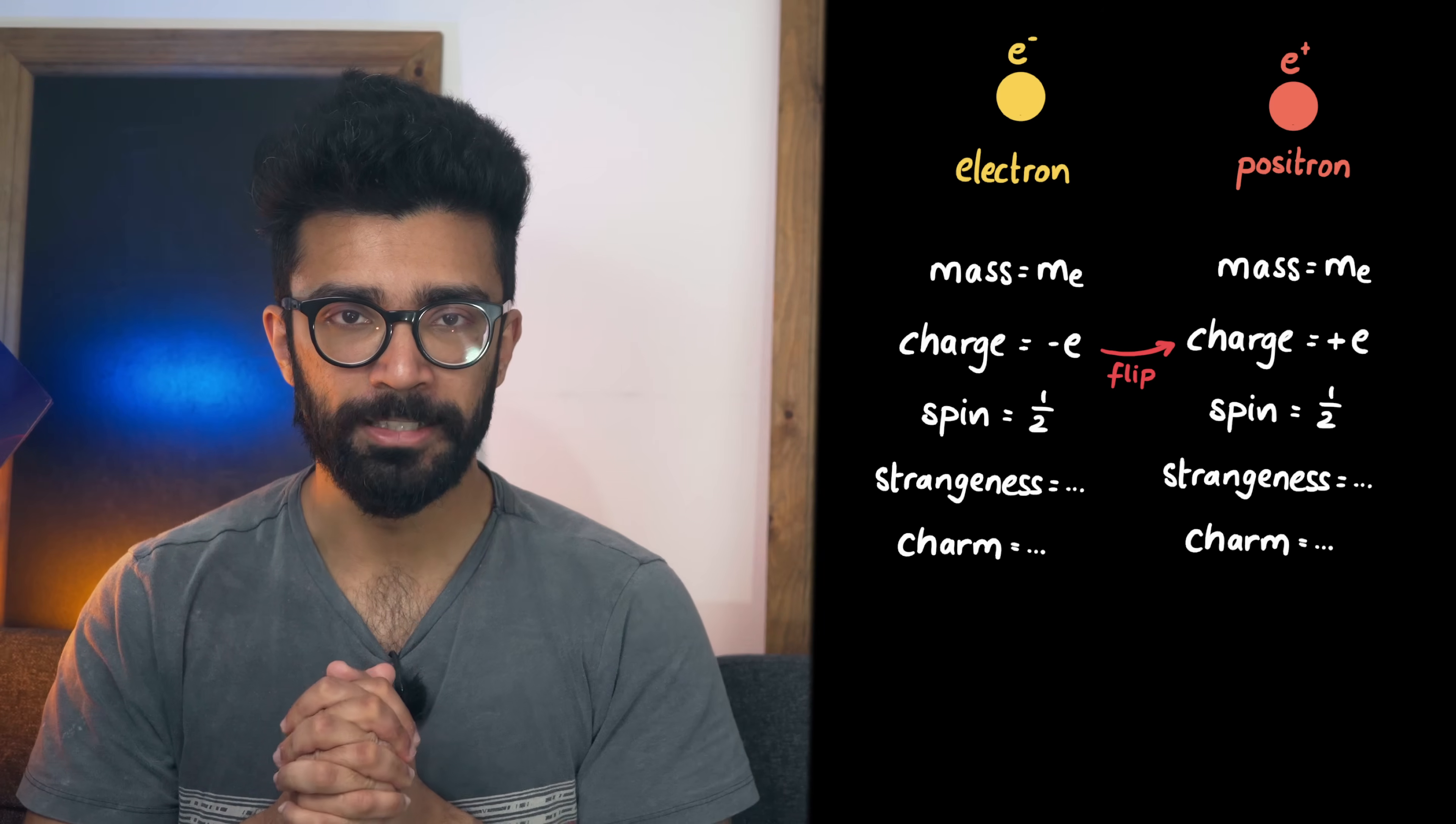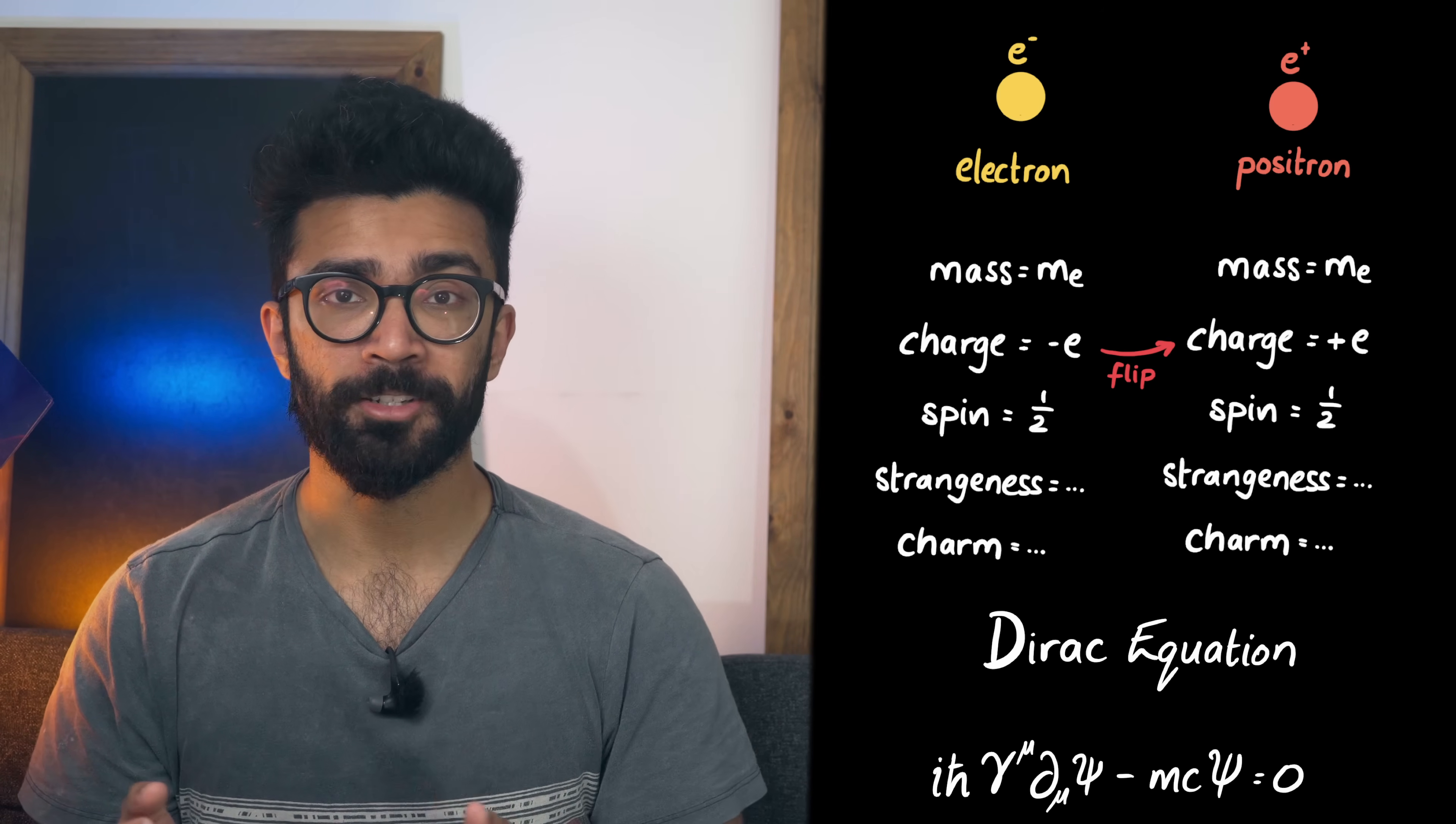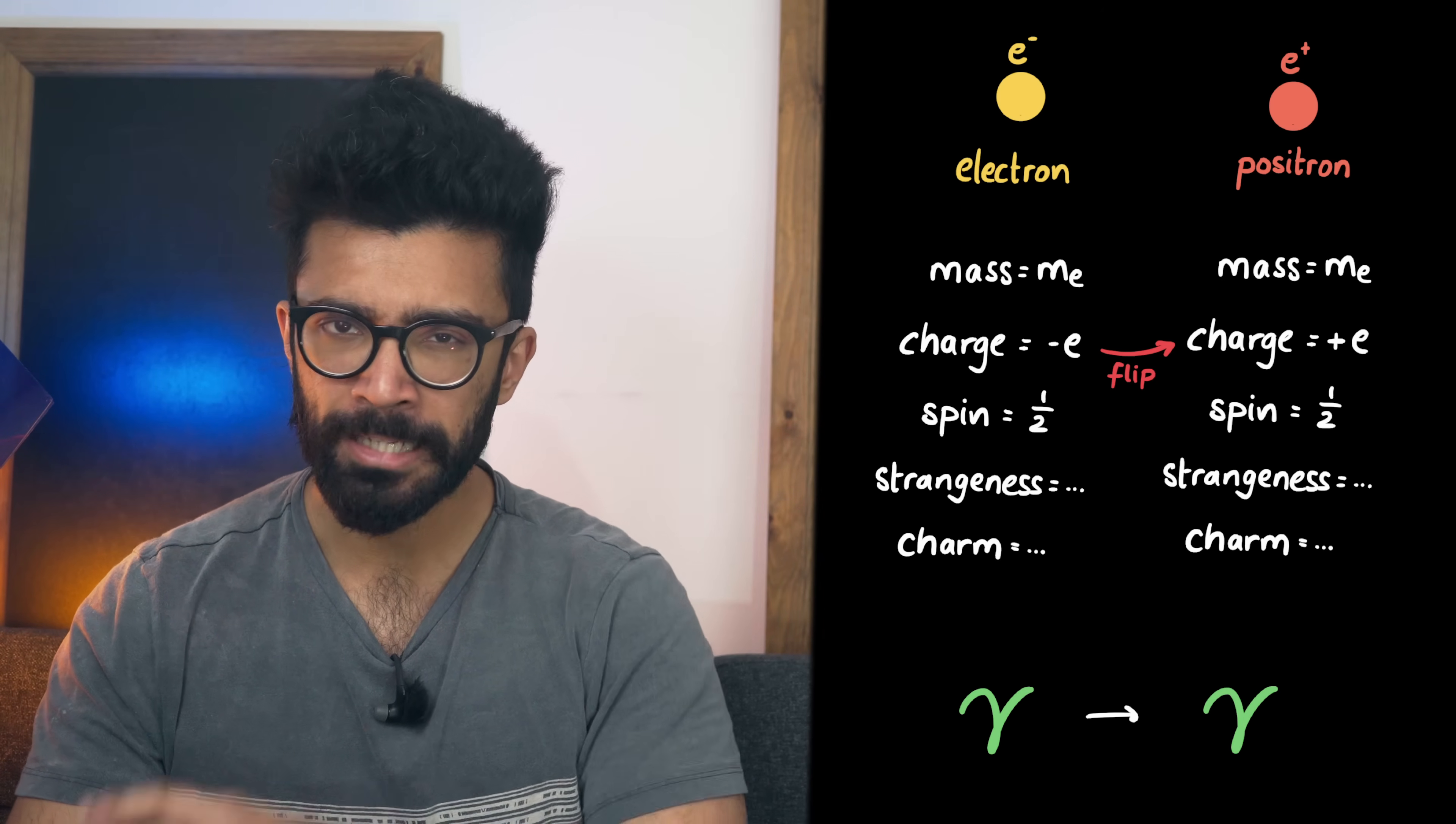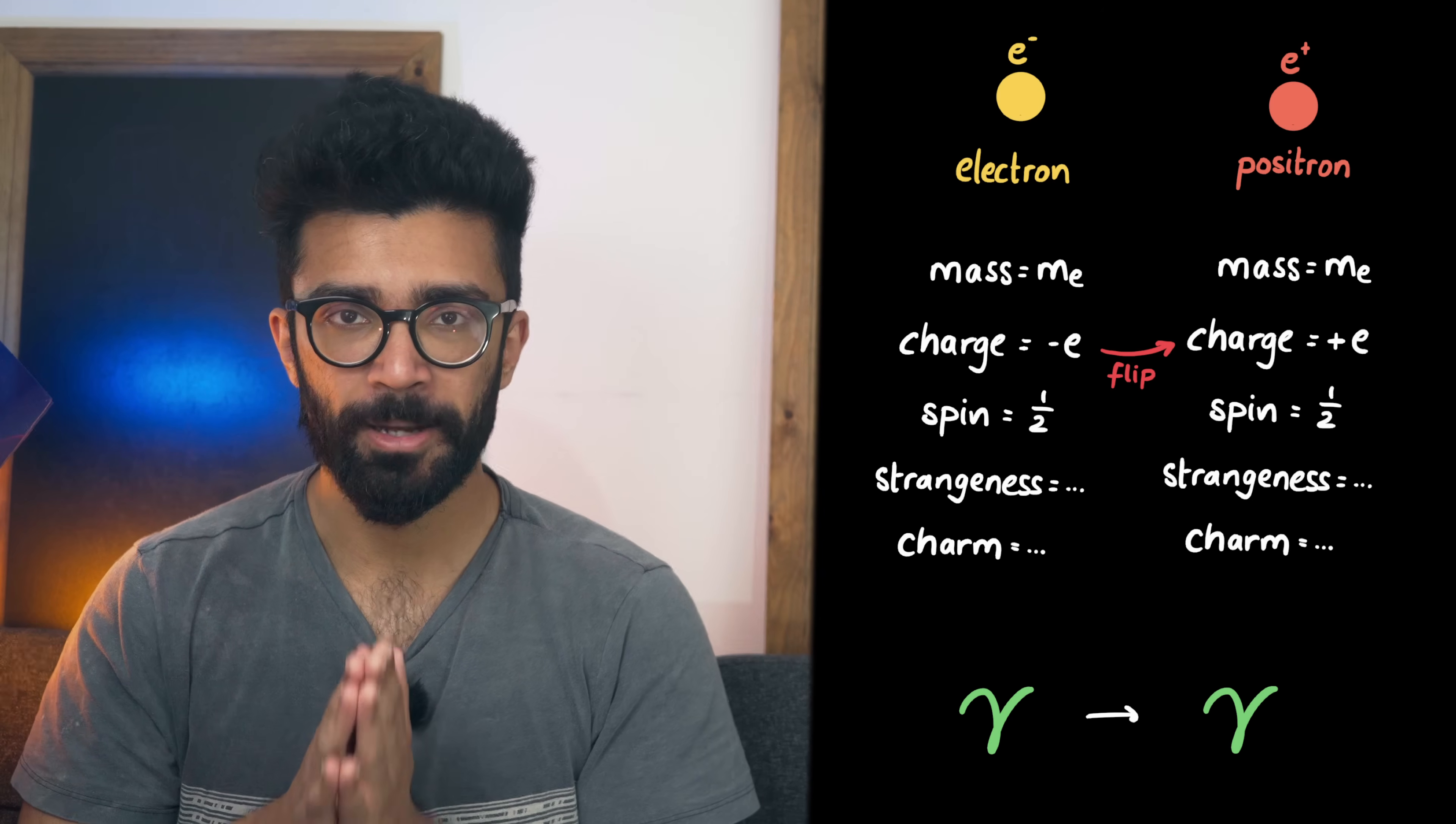Antiparticles were first predicted by Dirac when he was working on the Dirac equation and he initially thought that there was something wrong in his maths. But we now know that antiparticles do exist. It's also worth mentioning here that since a photon has zero charge it is its own antiparticle. Now this isn't always true for all particles with zero charge because of some other properties but again for this video that's all that matters to us here.